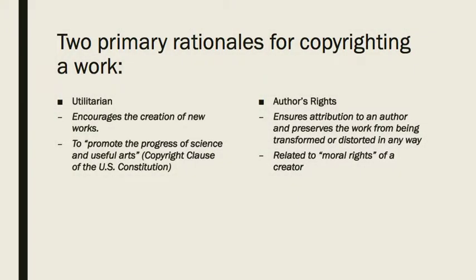According to copyright law, there are two rationales for copyright. The first is utilitarian and encourages new works — it is like a financial incentive to promote the progress of science and the useful arts. The other is author's rights: the desire to ensure that attribution is paid to the creator, also called right of paternity. It ensures that the work is kept in its original form without any distortions or transformations, also called the right to protect the work's integrity.